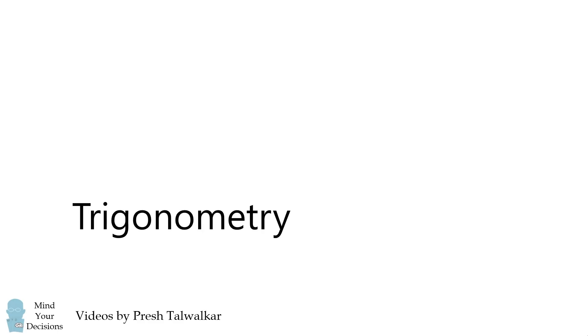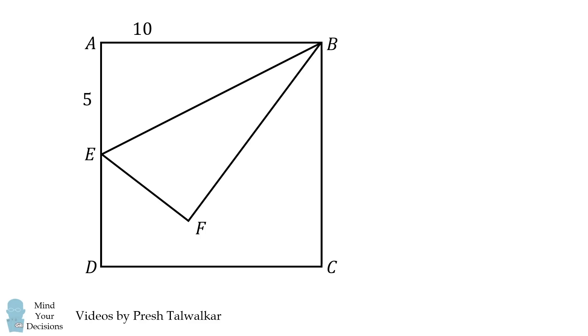We'll now move on to the third method of trigonometry. To get started, recall that the hypotenuse EB has a length equal to 5 times the square root of 5. Then, triangle AEB is congruent to triangle FEB.